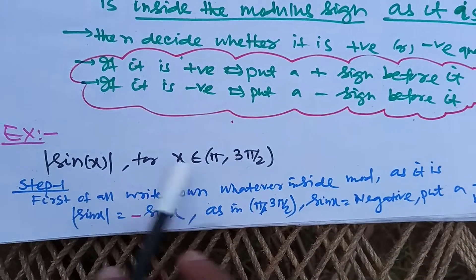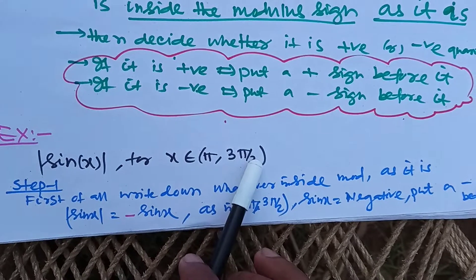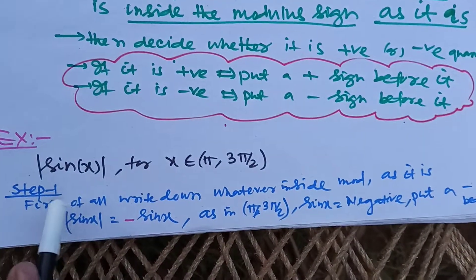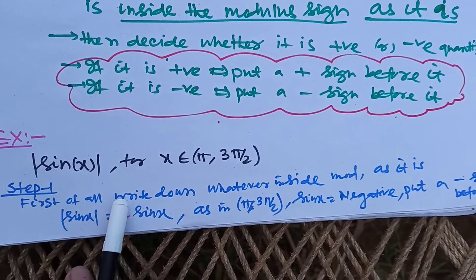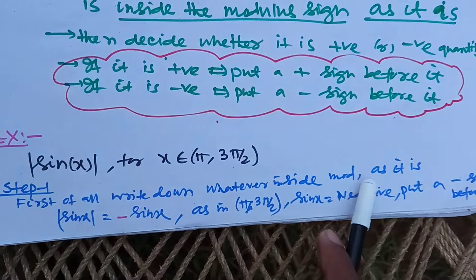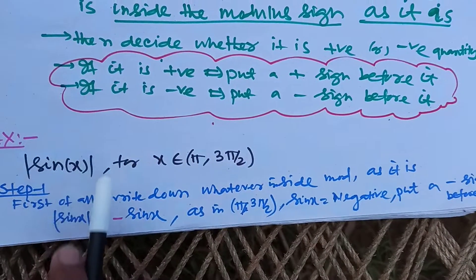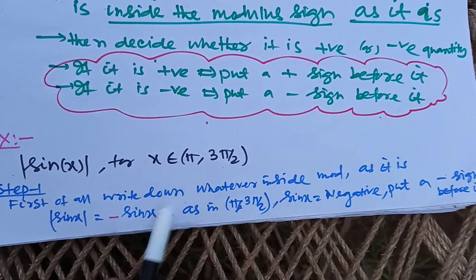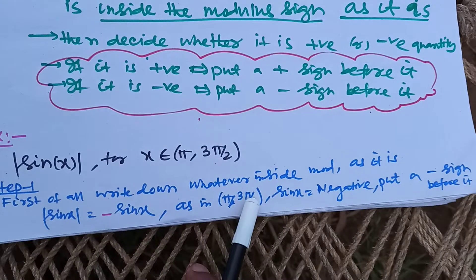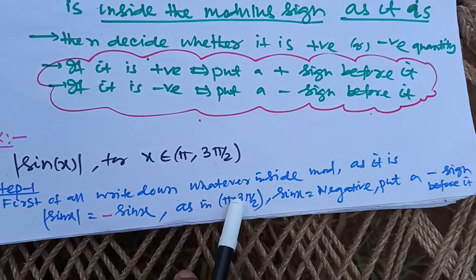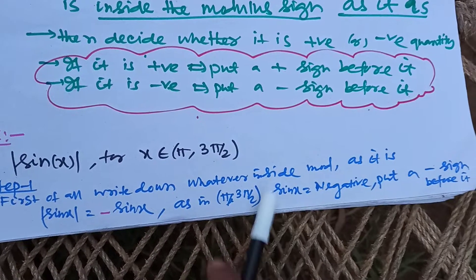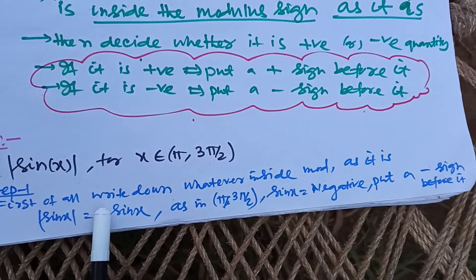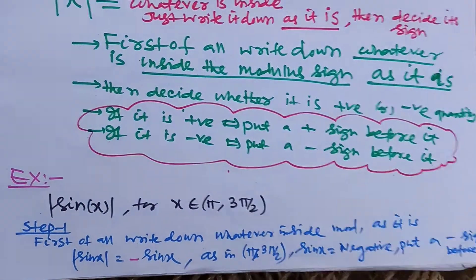We have to find |sin x| for x belonging to [π/2, 3π/2], which is the third quadrant. First, write down what is inside the modulus: sin x. In the interval [π/2, 3π/2], sin x is a negative quantity, so we put a negative sign before it. That's it — the whole story. Thanks for watching.